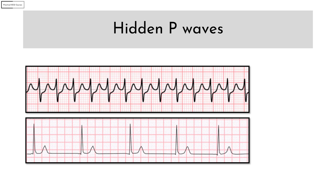The two important DDs for hidden P waves are SVT and junctional rhythm. To diagnose these conditions, you have to look at the other findings on the ECG. If there is a regular narrow complex tachycardia, consider SVT. If there is a narrow complex rhythm with a rate between 40 to 60, consider a junctional rhythm.